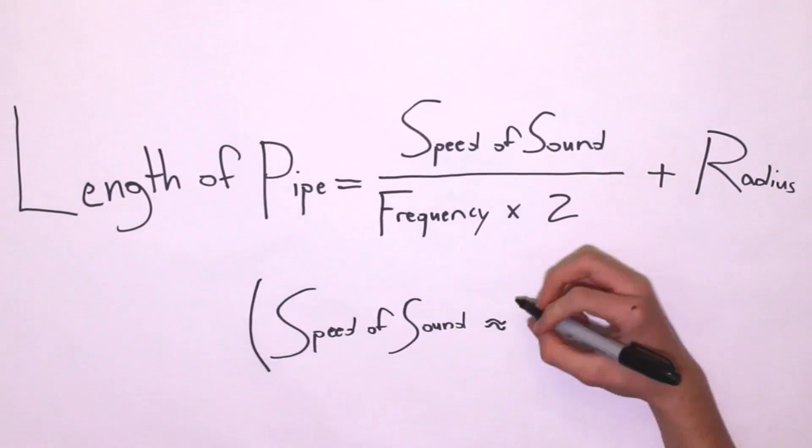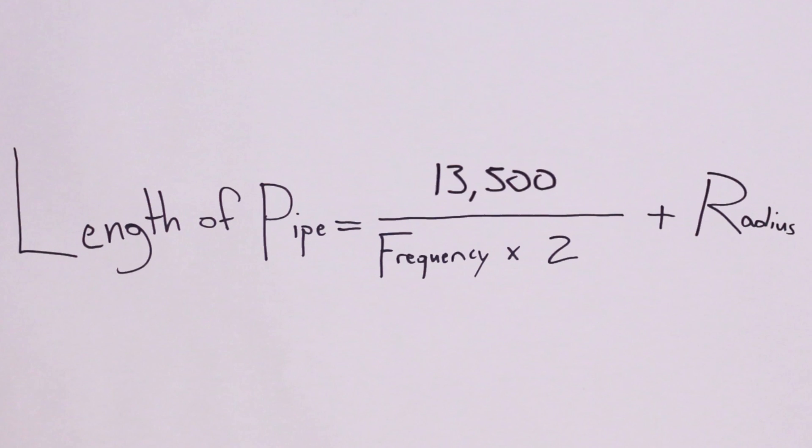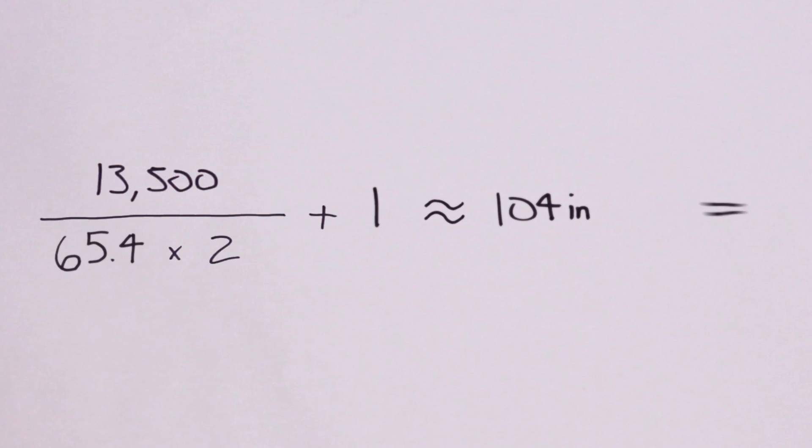The speed of sound is usually about 13,500 inches per second. Let's say we wanted to produce a low low C with a frequency of 65.4 hertz using pipe with a radius of about an inch. We can plug the numbers into our equation. The length of pipe equals 13,500 divided by 65.4 times 2 plus 1, which is approximately 104 inches or 8 feet 8 inches.